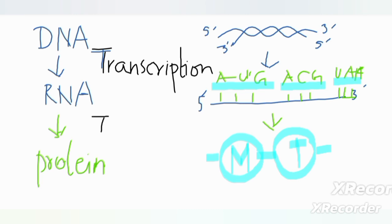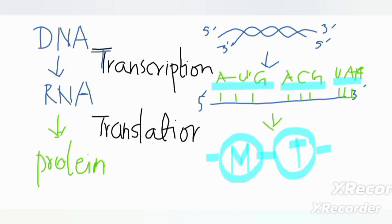These stop codons do not code for any amino acid, and they are present at the end of sequences that code for an amino acid chain. This process, in which a ribonucleotide sequence is translated into an amino acid sequence of protein, is known as translation.